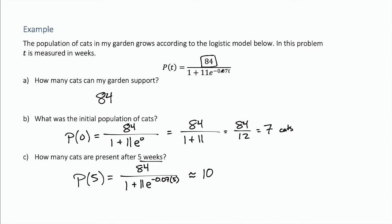So this is growing pretty slow and that's determined by this number here right. The smaller this number here is, the slower the growth. And so you know started at 7. We're at 10 cats after five weeks. But we do know that the limit is 84. So this is going to start growing a little bit faster and eventually get really really close to 84.